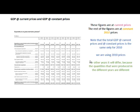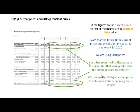For other years the figures will differ because the quantities produced in different years are different — of course we are using the same 2010 prices, but the quantities produced will vary. We can use GDP at constant prices to determine if GDP grew or shrank for every particular year by calculating the percentage changes in real GDP.